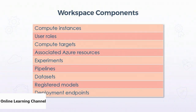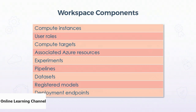Then there are experiments — containers for your model runs. Each time you want to execute a model training session, you apply that to an experiment, and experiments can have one or many runs. Experiments are contained in an ML workspace. Of course, there are also datasets — datasets can be external to ML workspaces, but the references to those datasets are internal. ML workspaces also include a list of all the registered models and their versions.